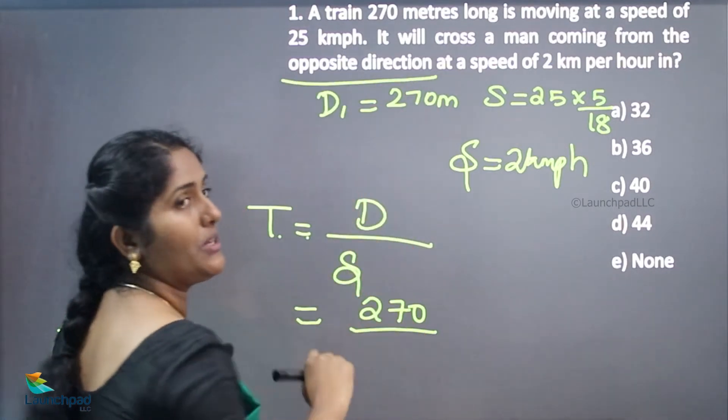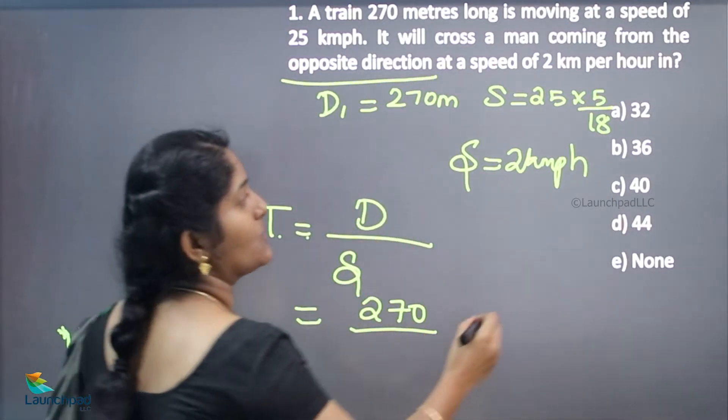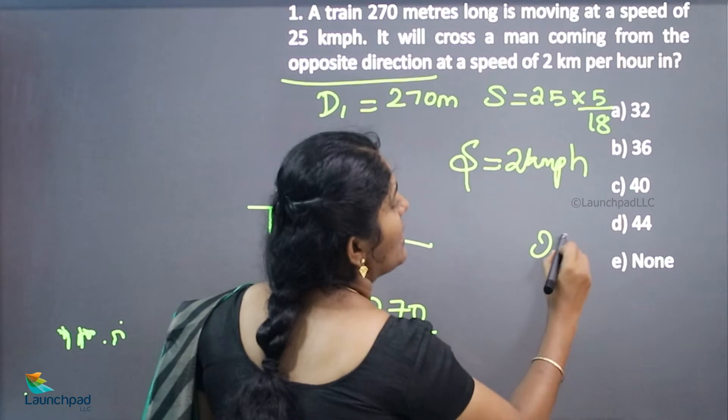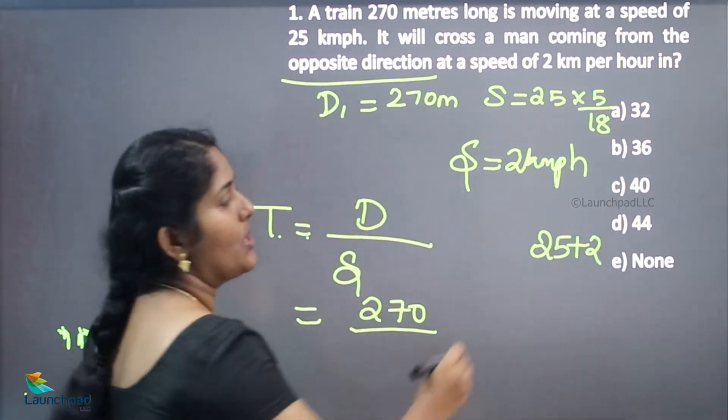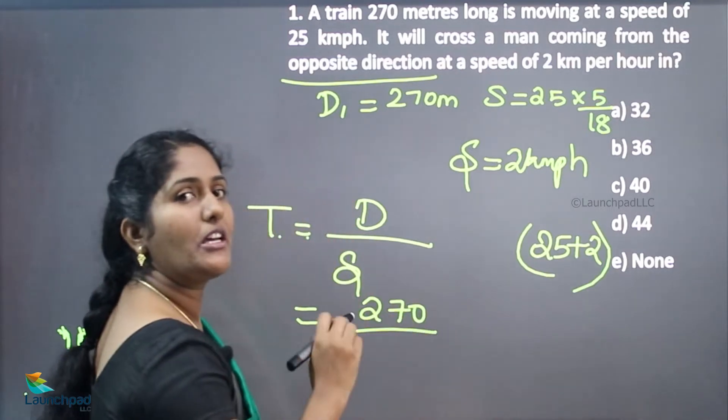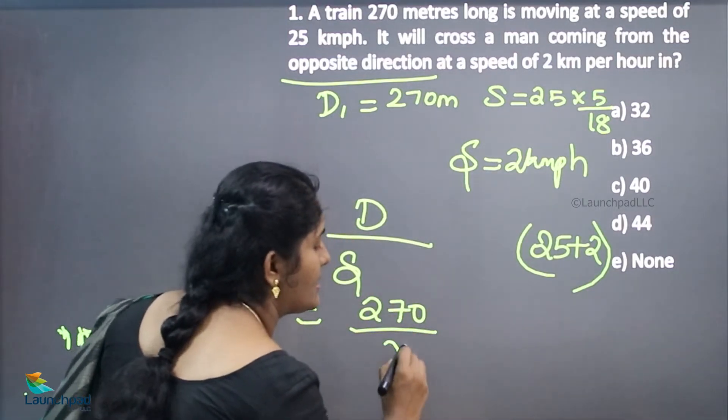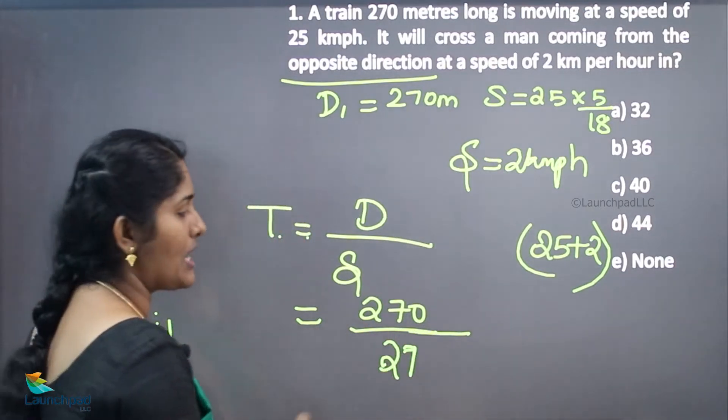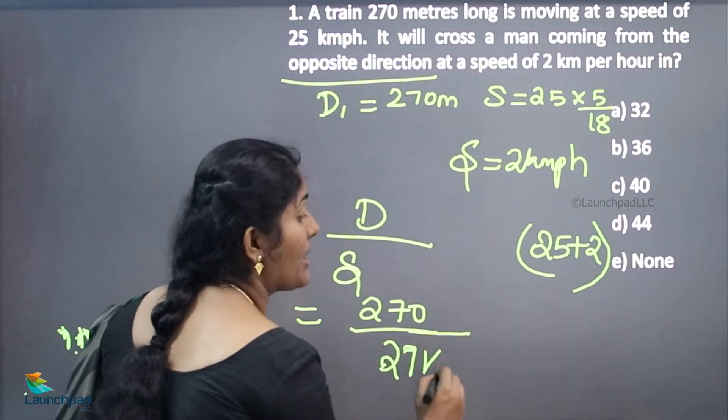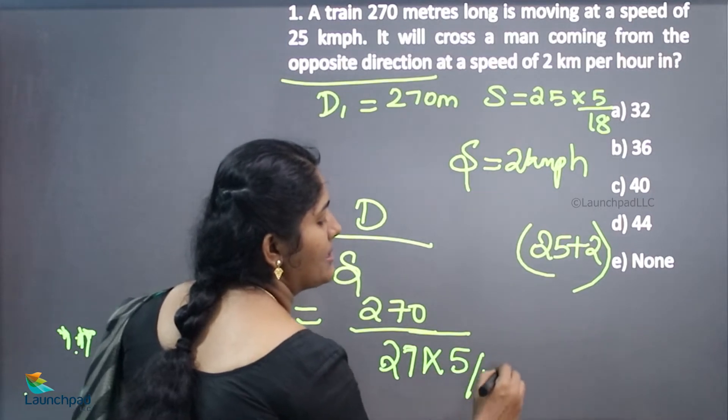If they are in opposite directions, we should add both speeds. The speed of the train is 25 and the speed of the man is 2. Adding these two speeds, we get 27 kilometers per hour. We should convert 27 kilometers per hour into meters per second.